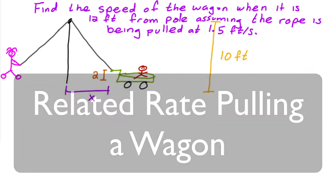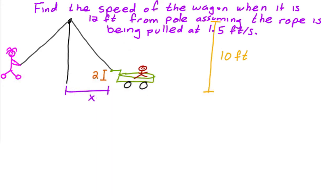Here we have a situation where we've got a little wagon attached to a rope. Up here there's a little pulley, and this guy is walking this way and pulling the rope, which pulls the wagon in. The question is: what's the speed of the wagon — how fast is it getting pulled when it's 12 feet from the pole, assuming the rope is being pulled at 1.5 feet per second? Step one is to draw a picture and label.